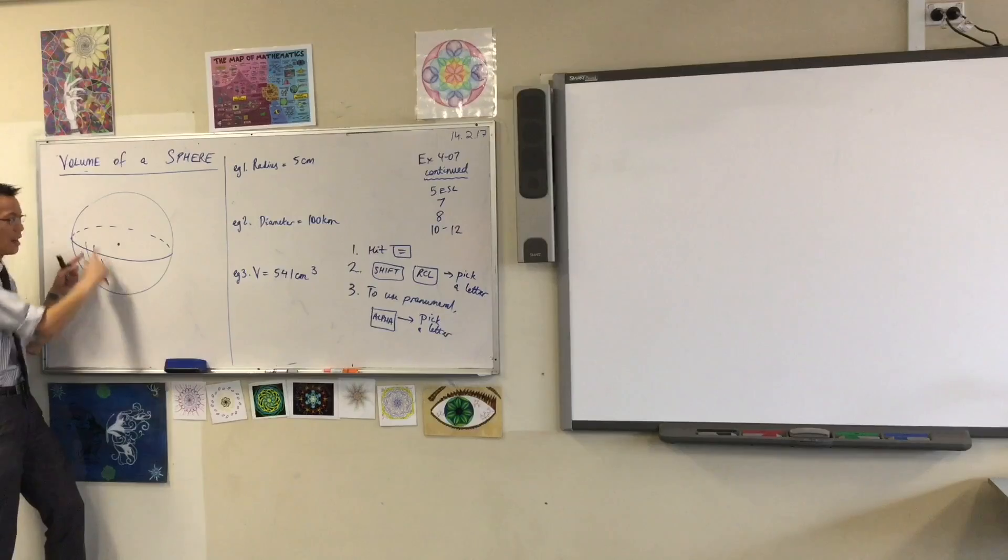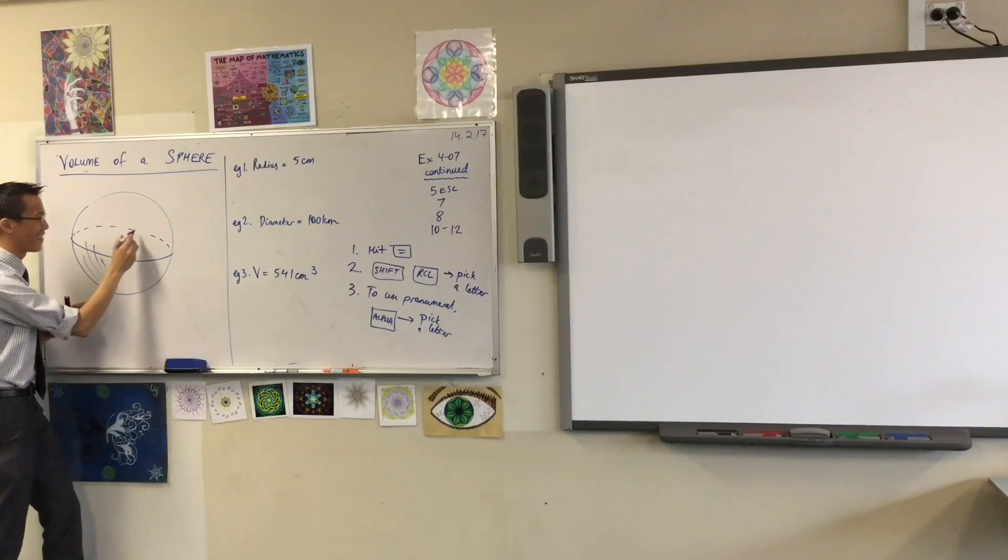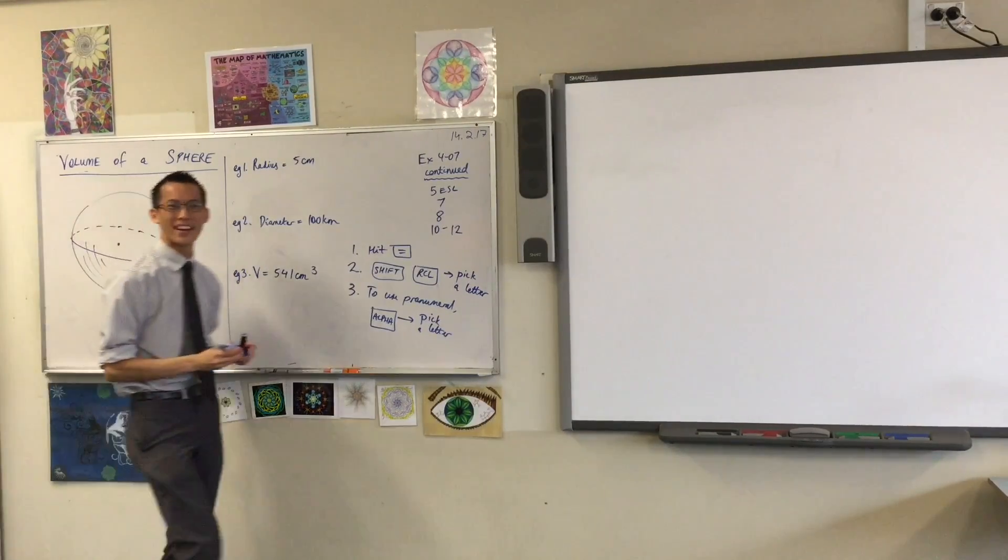Well hold on, just this line I mean. So I've got hemisphere here, hemisphere here. This line would be the equator. So this equator, right?